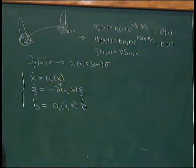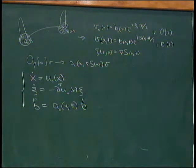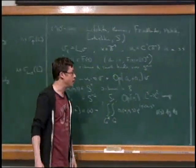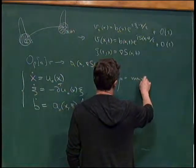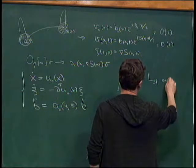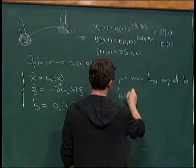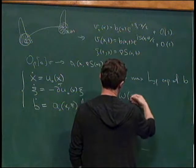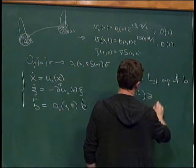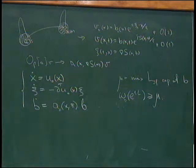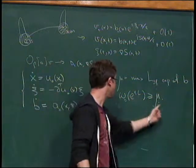The question becomes: if this amplitude grows exponentially in time, does it mean the steady state is unstable? Can we produce exponentially growing solutions? The answer is yes. Introducing the maximal Lyapunov exponent μ of the amplitude equation B, we know that the maximal growth rate of the semigroup is greater than or equal to μ. This first theorem was produced by these four authors in the early 1990s — a direct relationship between geometric optics instability and the semigroup growth.